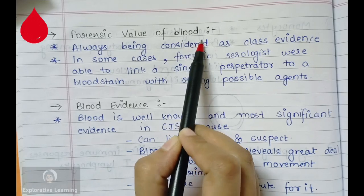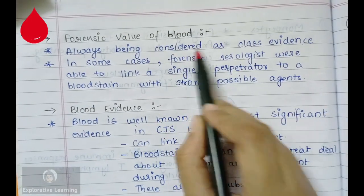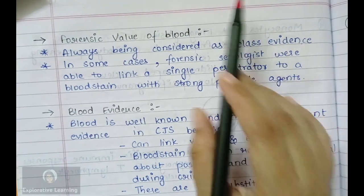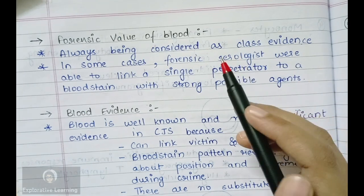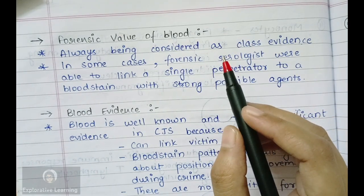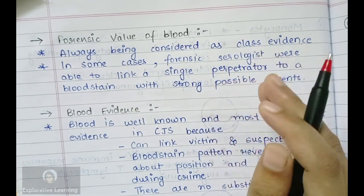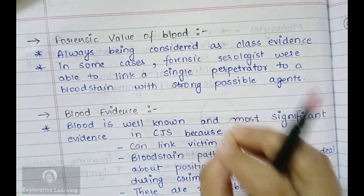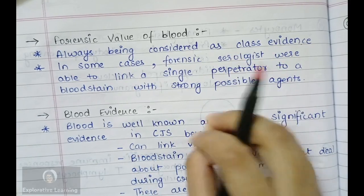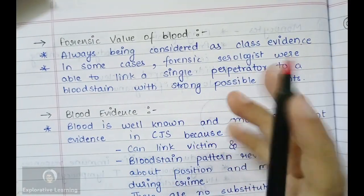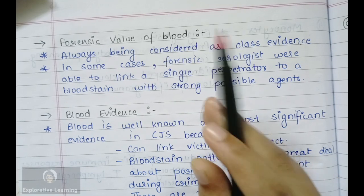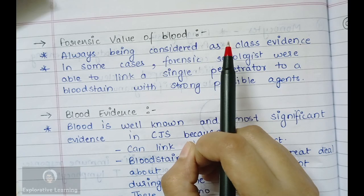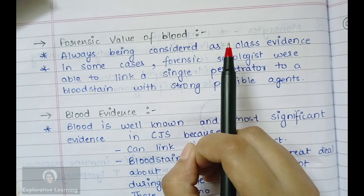You must know the forensic value of blood as evidence. It is always considered as class evidence. There are two types of evidence: class evidence and individual evidence. Individual evidence is used to identify individuality — for example, if a blood sample of B-positive blood group has been obtained from the crime scene, that is individual evidence. But if only a blood droplet is encountered from the scene of crime, you may not be certain whether it belongs to a person or an animal.